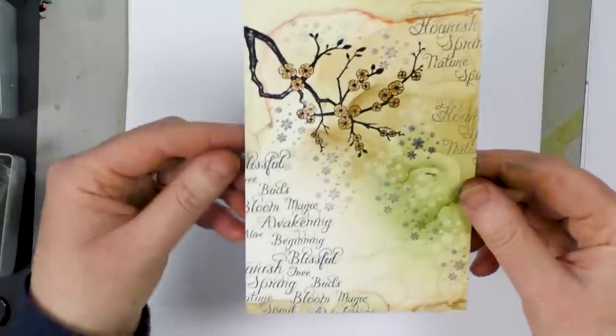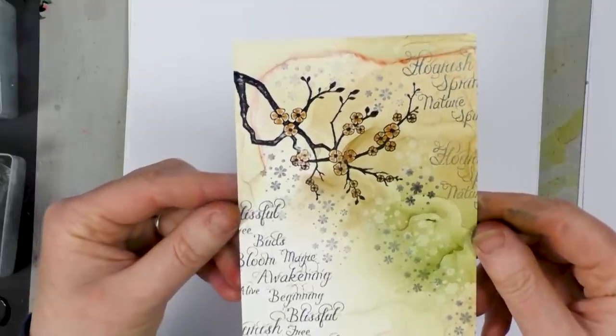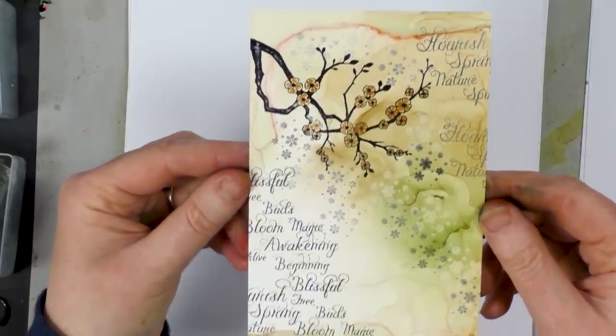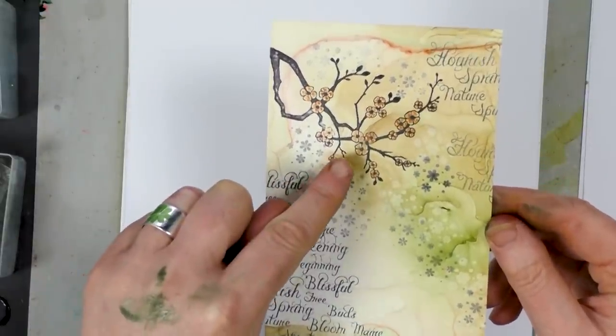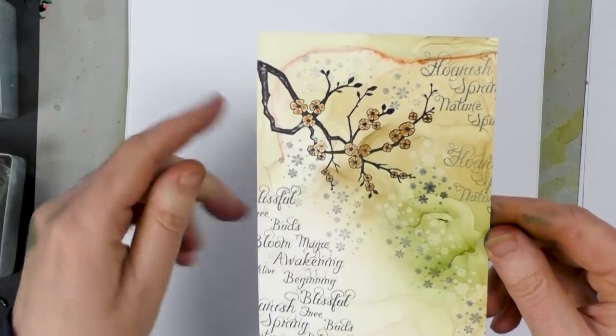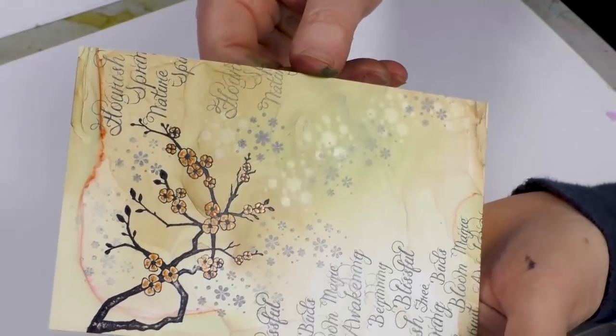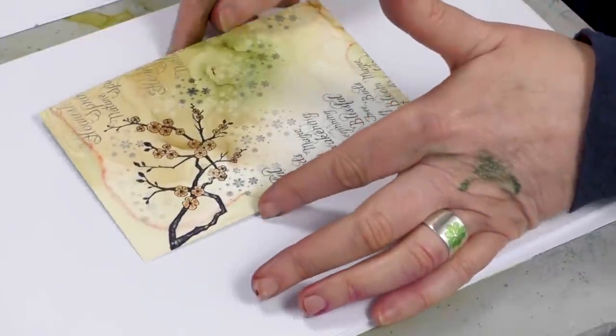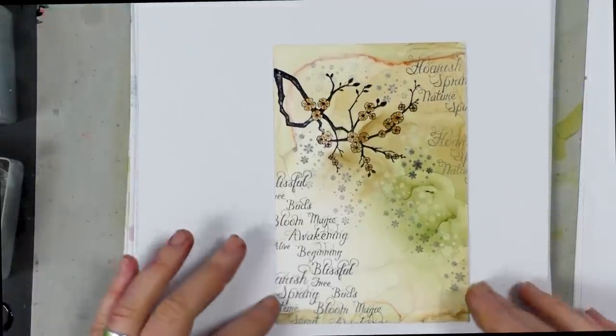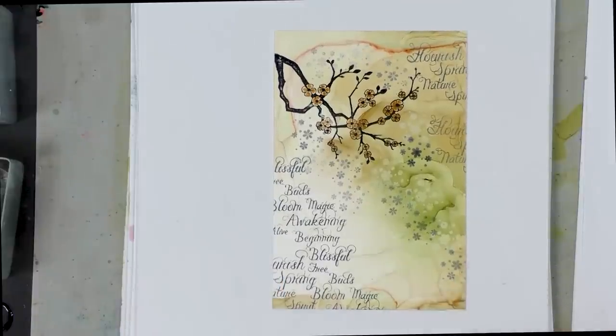Okay, now I think that looks really pretty and works so well with the Yuppo. So I hope you can see that and that you can see the Jelly Roll pen, the metallic there just coming through. So that's how quick and easy it is to decorate our Yuppo card and make it into a fabulous card. Thanks for watching guys. Bye for now.